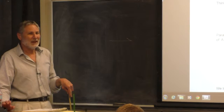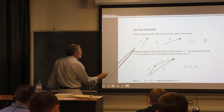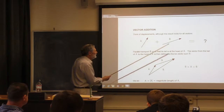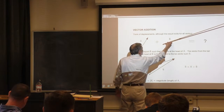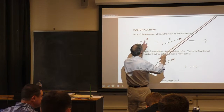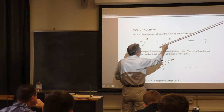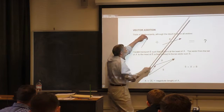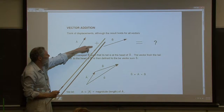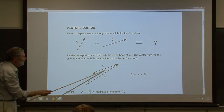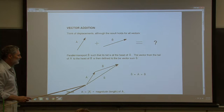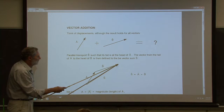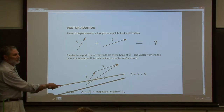We need to be able to add vectors. Here's vector A and vector B. To find the sum, we take B and parallel transport it so that its starting point is the ending point of A — the head of A is the tail of B. Then we draw the vector from the starting point of A to the end point of B, and that's defined to be the vector sum.